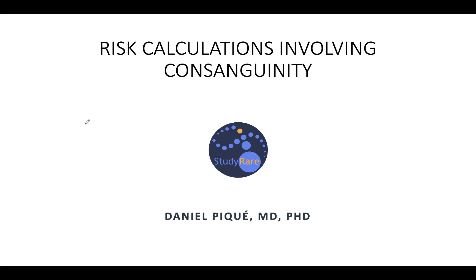Today, we'll be talking about risk calculations involving consanguinity. Normally, if you're asked what is the risk of having an affected child, you can identify the risk of the father of being a carrier of a disease, and then you can identify the risk of the mother of being a carrier of a recessive disease. Then you can multiply those numbers by one-half times one-half, so by one-fourth, and that will give you the risk of having a child with a recessive disease.